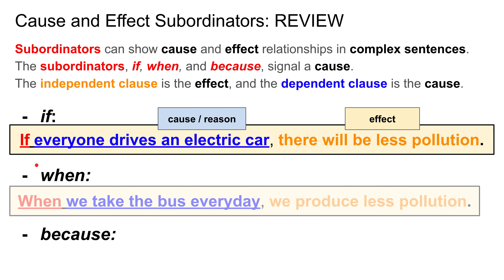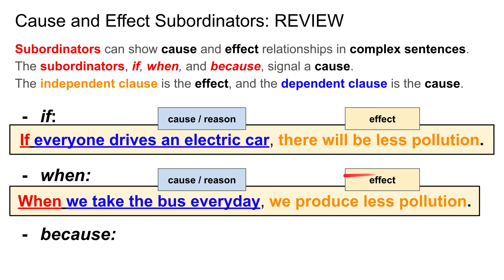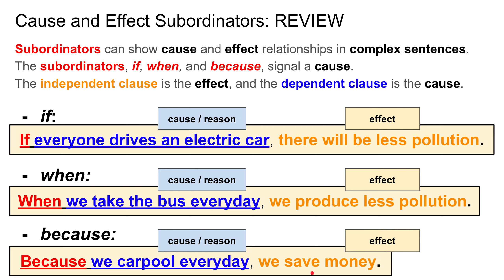Another example using 'when': 'When we take the bus every day' is the dependent clause — the cause. 'We produce less pollution' is the independent clause — the effect. So: 'When we take the bus every day, we produce less pollution.' And with 'because': 'Because we carpool every day' is the dependent clause — the cause. 'We save money' is the independent clause — the effect.